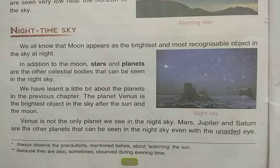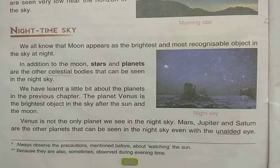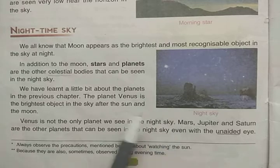In the previous video we learned about the nighttime sky. We learned that we can see the moon, stars, and planets in the nighttime sky, and that the planet Venus is the brightest object in the sky after the Sun and Moon.